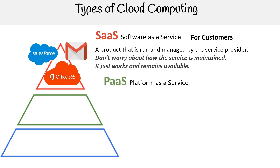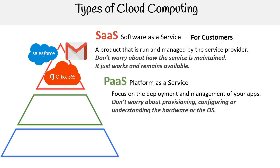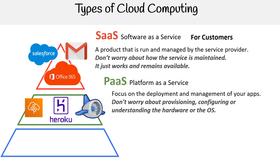The next category we have is Platform as a Service, abbreviated as PaaS. Here we focus on the development and management of your applications. You don't have to worry about provisioning, configuring, or understanding the hardware or operating system. This is really for people that are building apps but don't think about any of the infrastructure. Examples include Elastic Beanstalk on AWS, Heroku — which is very popular amongst junior developers — and the Google App Engine. These are really for developers.